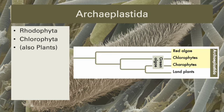The Archaeplastida seem to be the source of chloroplasts for all other photosynthetic eukaryotes we've discussed, through a process known as secondary endosymbiosis. We have seen algae in Excavata and SAR. But what are algae? Essentially, photosynthetic eukaryotes that aren't plants.